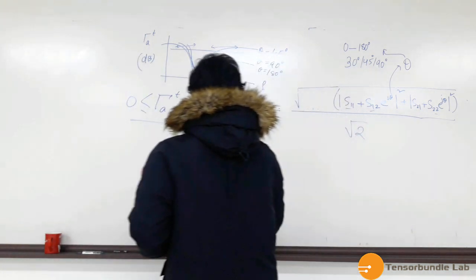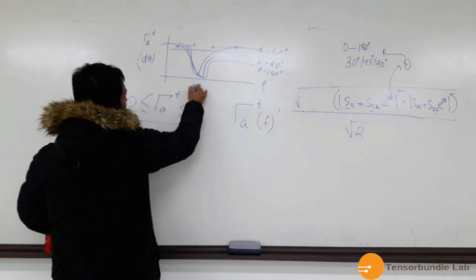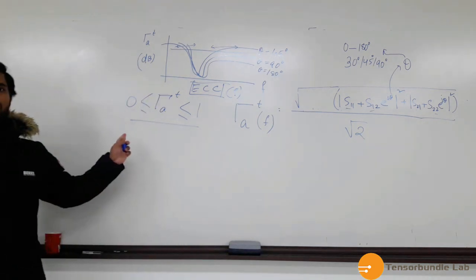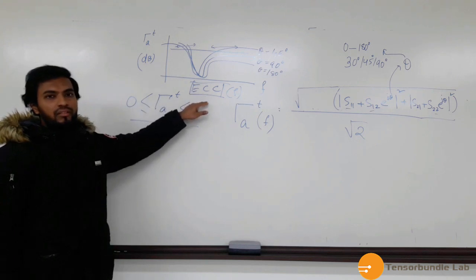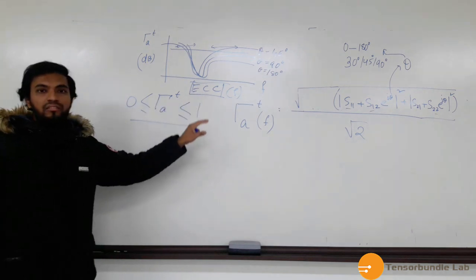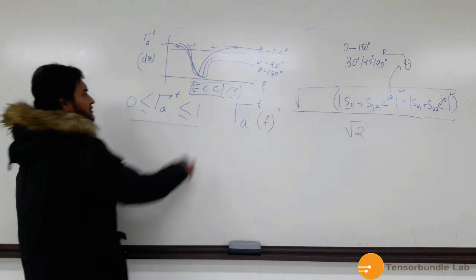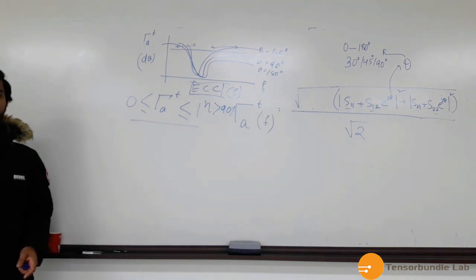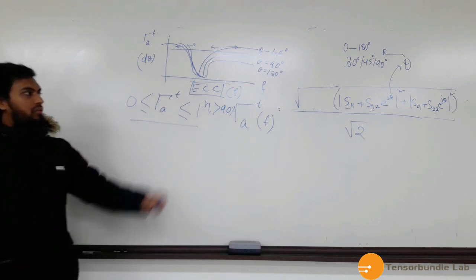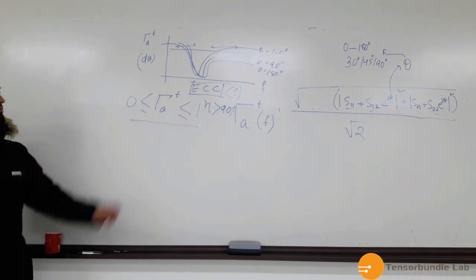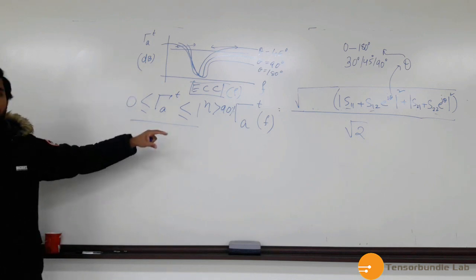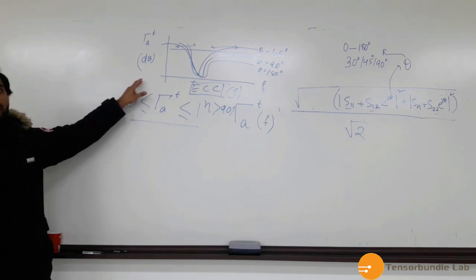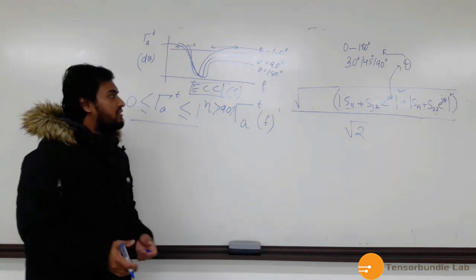And some people use another parameter called envelope correlation coefficient, or ECC, denoted by rho. There is nothing wrong with this parameter. You can use it. But there is one condition. You can use it for highly efficient antennas. If your antenna is, for example, your efficiency is greater than 90% or 80%, then there is nothing wrong with it. You can use ECC. But to remain in the safe side, and since TARC provides you more comprehensive information alongside the variation of theta, so it's better to use TARC plotting in research papers or any other technical reports.